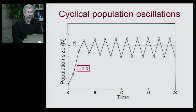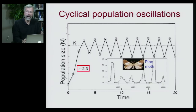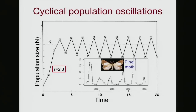Where r is even higher, the population overshoots so much it gets thrown back below the carrying capacity, then goes above and below back and forth around K — cyclical population oscillations. These are actually observed. It's well known in an important agricultural pest, the pine moth, that pine moth outbreaks in the U.S. can be predicted — every 5 or 6 years, following this cyclical population oscillation.